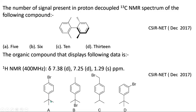Option A will give a nine-hydrogen singlet corresponding to the 1.29 singlet, and the two sets of aromatic protons will each give a doublet. The remaining options B, C, D have more than three signals — option B gives four signals, option C gives five, and option D gives five — but we have only three signals. So option A is the correct answer. This is one of the easiest questions ever asked.